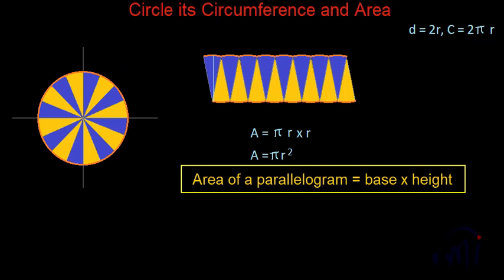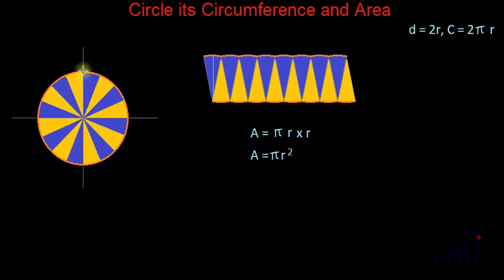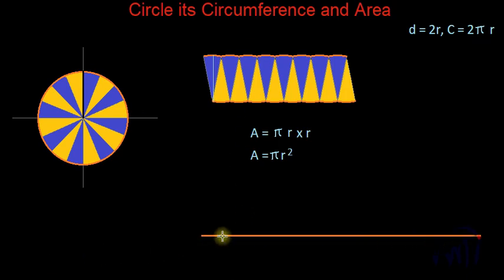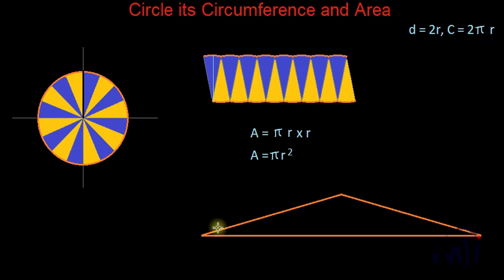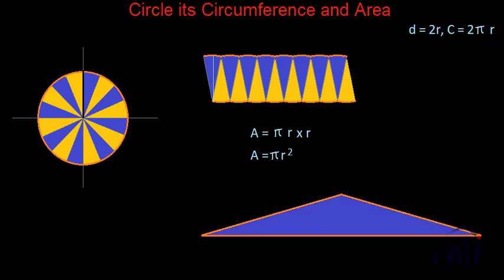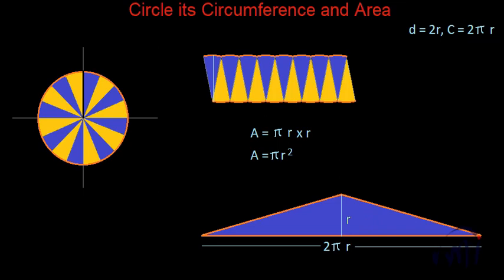This is one way of finding the area of the circle. Another way is to cut this circle from its circumference to the center along a line, and then if you open it, it will get converted into a triangle whose base is equal to the circumference of the circle and height is equal to the radius. It will look something like this — a triangle with base equal to 2πr and height equal to the radius of the circle.